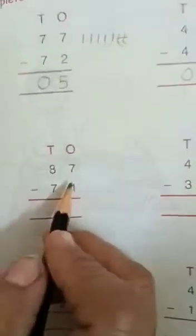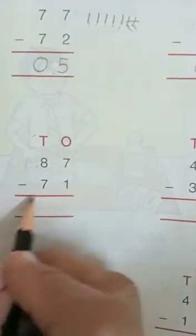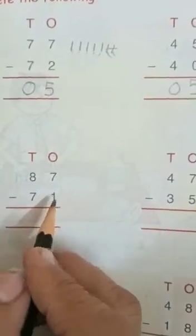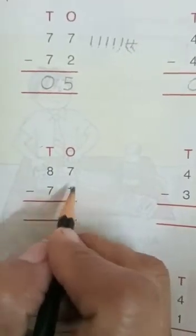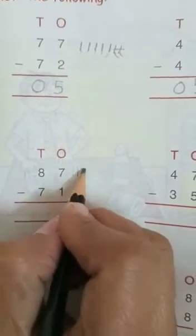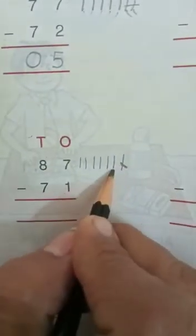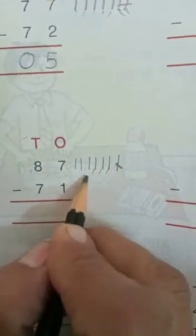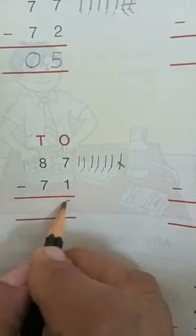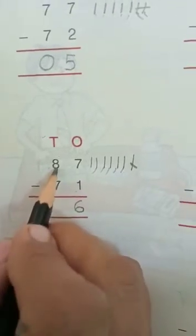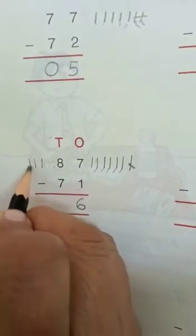Now next question: 87 minus 71. You have to take away one from seven — one, two, three, four, five, six, seven, one. How many lines are left? One, two, three, four, five, six.